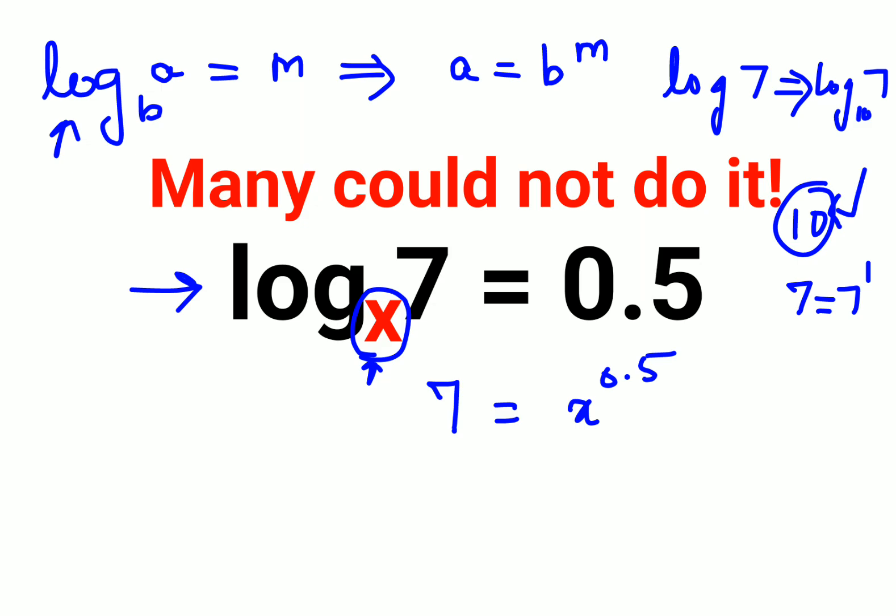Now here let's understand. People got stuck that raised to a decimal things get tricky. So please understand 7 equals 0.5 can be taken as a fraction which is 5 upon 10 which can be further reduced to 1 upon 2. So we have x raised to half.